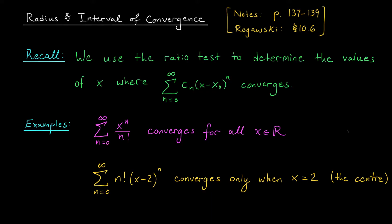In our second example, the other extreme occurs. The limit from the ratio test was equal to infinity for all x except when x equals 2, where that limit was 0. So our series will diverge everywhere except at its center; when x equals 2, the series will converge. Now in most cases, we aren't dealing with these two extreme situations. In general, a power series will converge for x values within some interval and diverge for x values outside of that interval. The interval where the power series converges is fittingly called the interval of convergence.